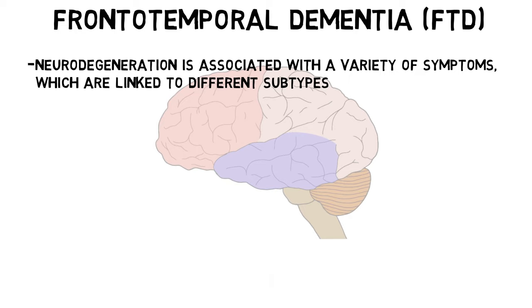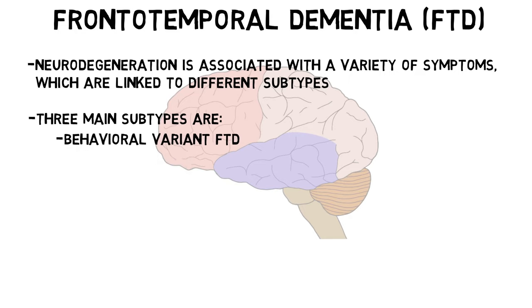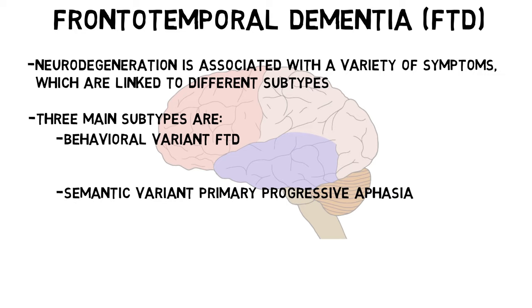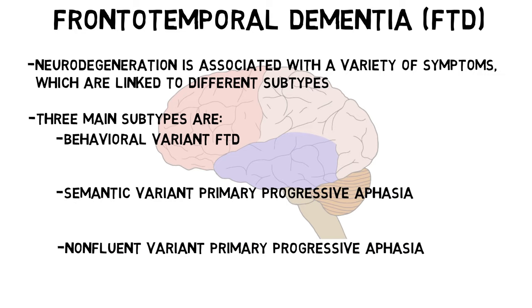The three main subtypes are behavioral variant FTD, semantic variant primary progressive aphasia, and non-fluent variant primary progressive aphasia.